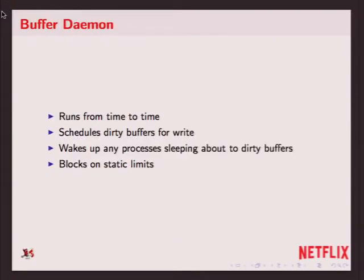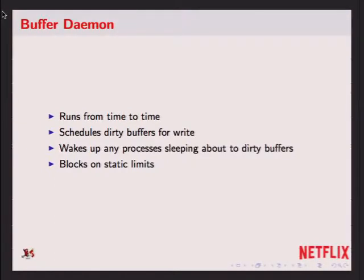The buffer daemon runs from time to time, goes through all the queues it has, schedules the buffers to write, checks the low and high water marks, and goes off and does the work. Depending on what the limit is, some will block the buffer daemon — particularly if there's a suspended file system — and some are ignored. One of the problems with the static limits is that sometimes you really, really need to write something no matter what has been scheduled. So the buffer daemon has special tricks to get around the limits imposed by B canwrite, which I'll talk about in a second. That's one of the problems with that hack as well.